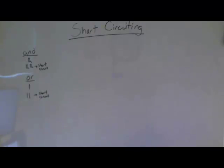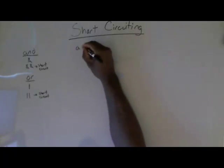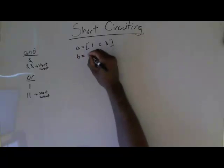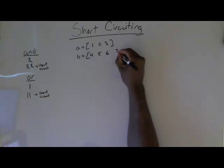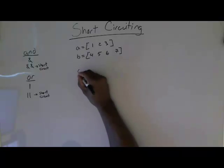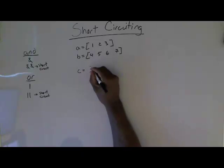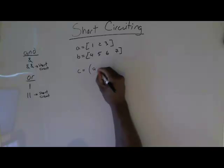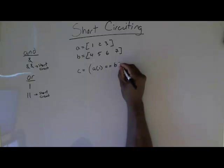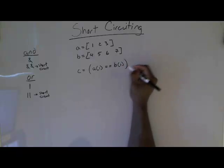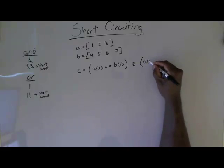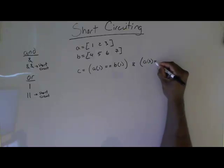Let's take something into account. Let's say we have vector A and it's 1, 2, 3 and vector B is 4, 5, 6, 7. And then we want to do something like C equals — A sub 1 equal to B sub 1 — and A sub 3 equal to...